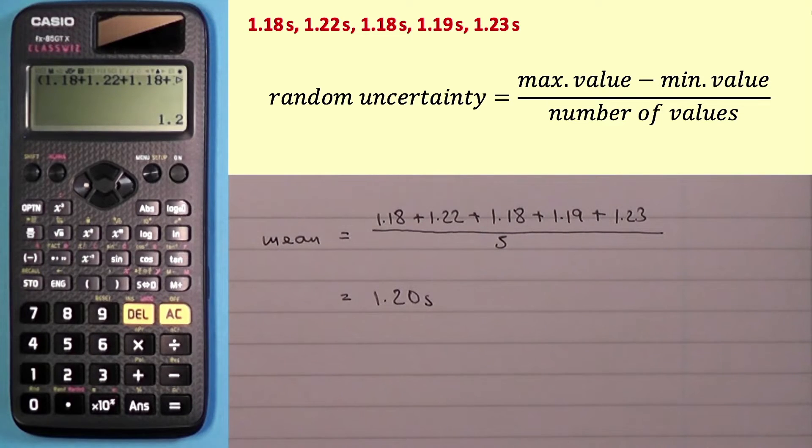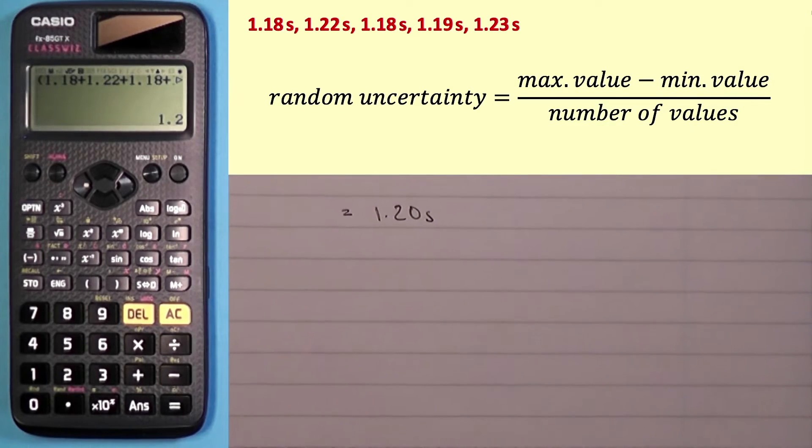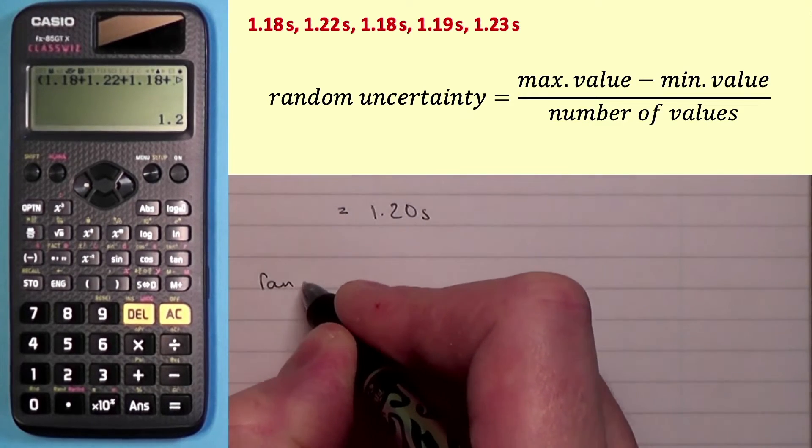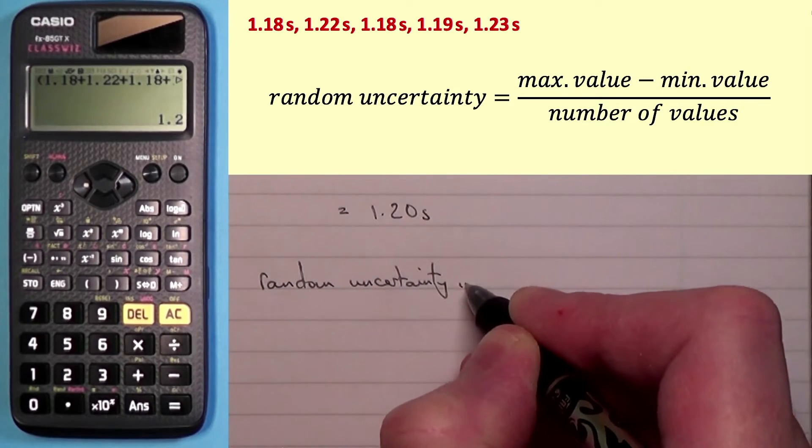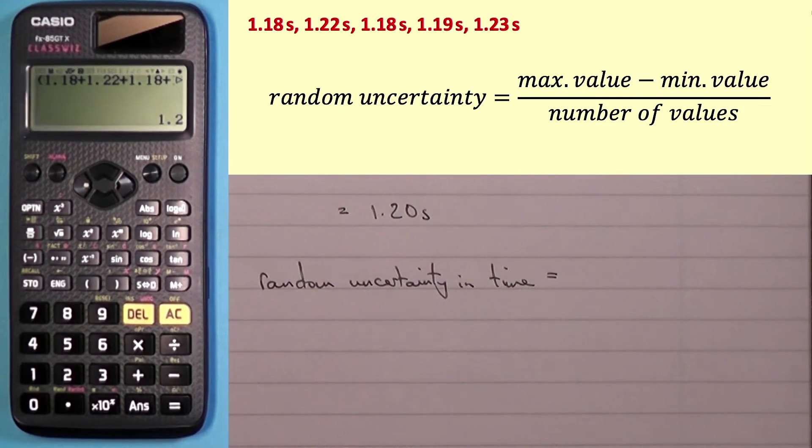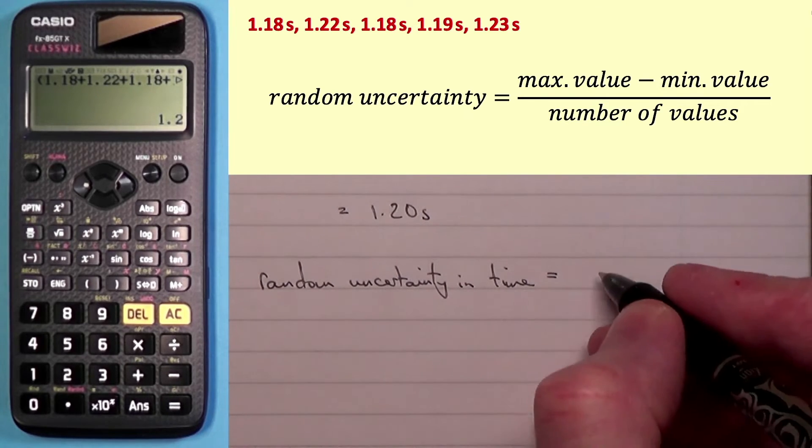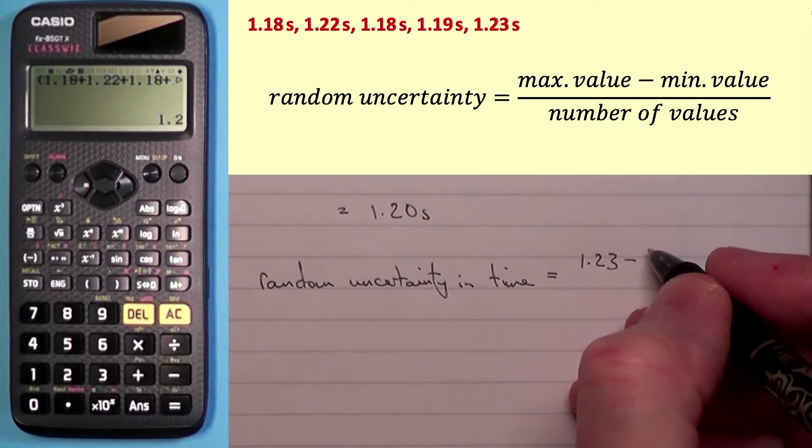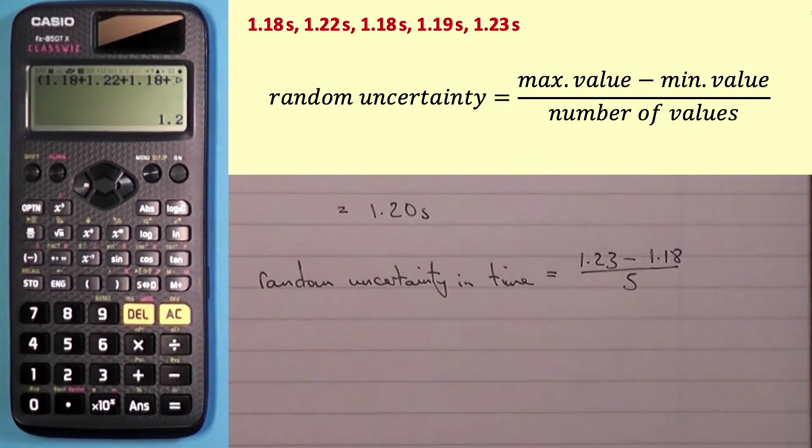Prefer that one. So to work at that random uncertainty in these values, in these times, we'll move that up a little bit like so just to give us a little bit more space. So I'll say random uncertainty in time. And I should really write that equation first. So if you're doing this in an exam, you'd write that equation as it's written at the top of the screen first. So imagine I've written that and then I would write the values. Now, what is the maximum value out of those five? It's 1.23, is it not? And the minimum value is, well I've got two of them, 1.18.